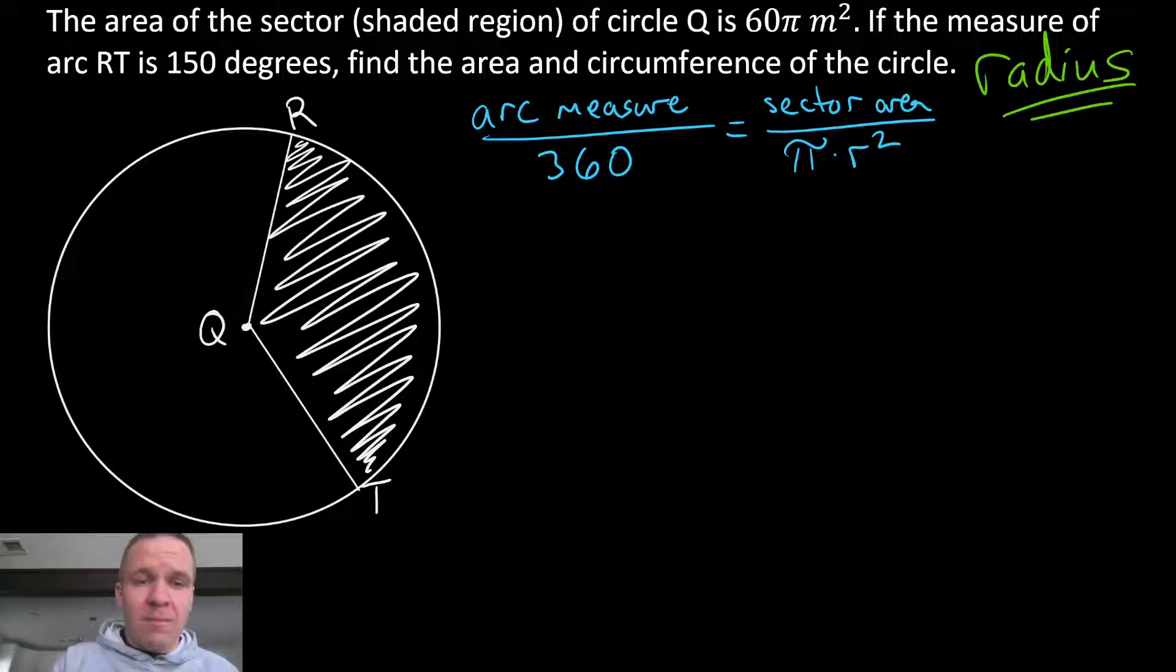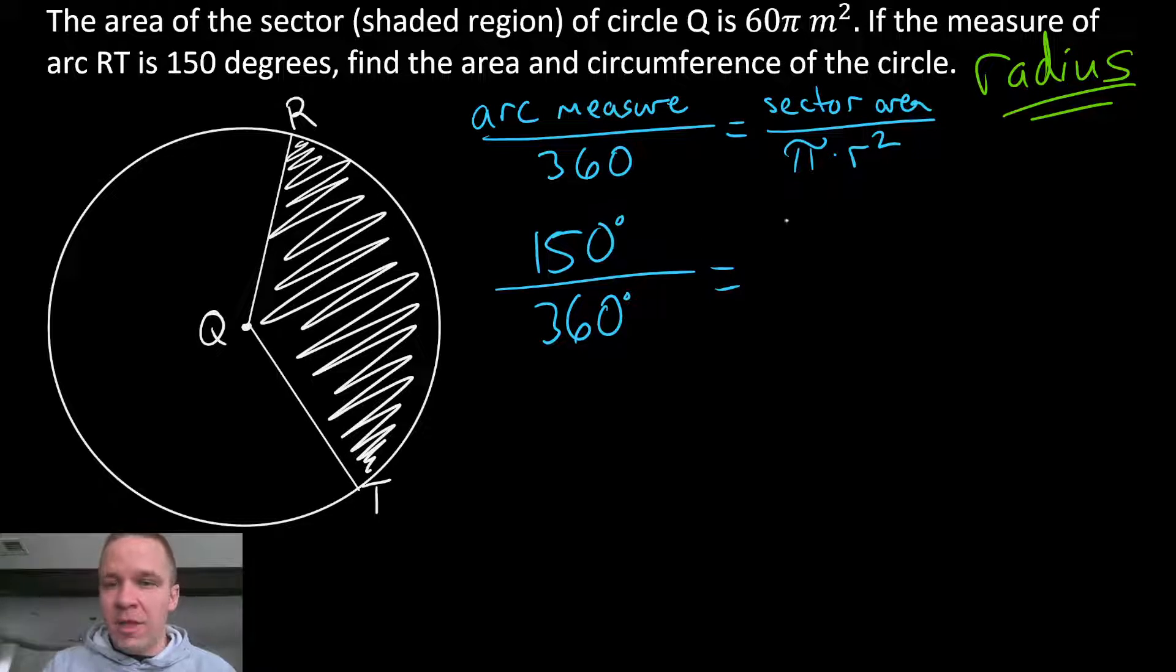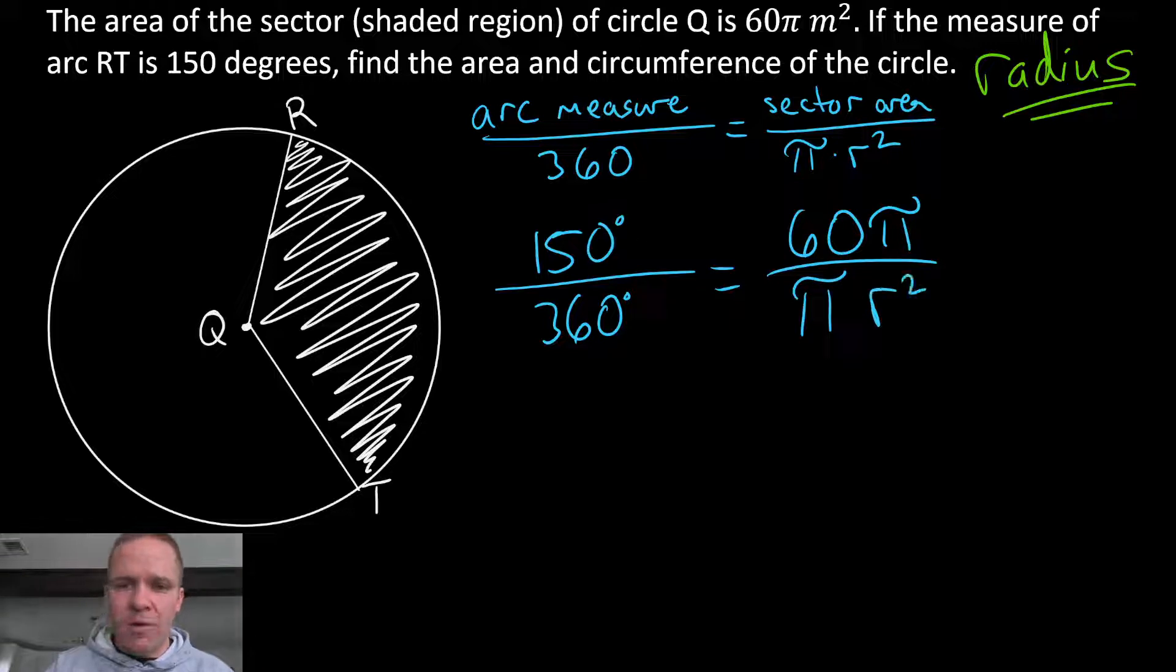I know that the arc measure is 150 degrees, per the problem, over the 360 degrees equals my sector area is 60π over π times the radius squared. And really I don't need these degree markings here since those units would actually cancel out in the fraction.